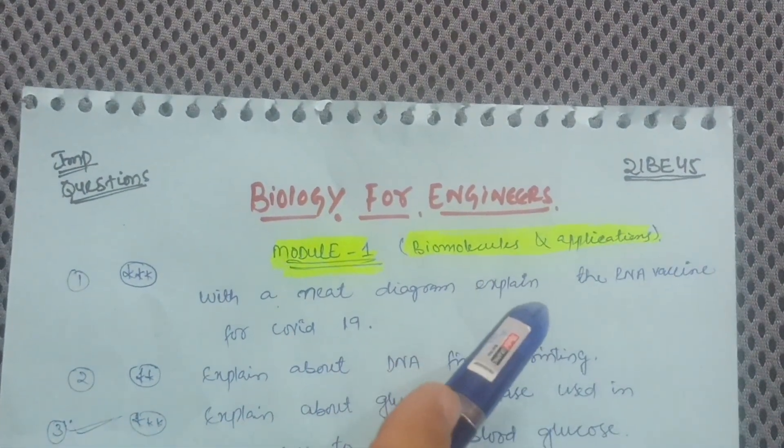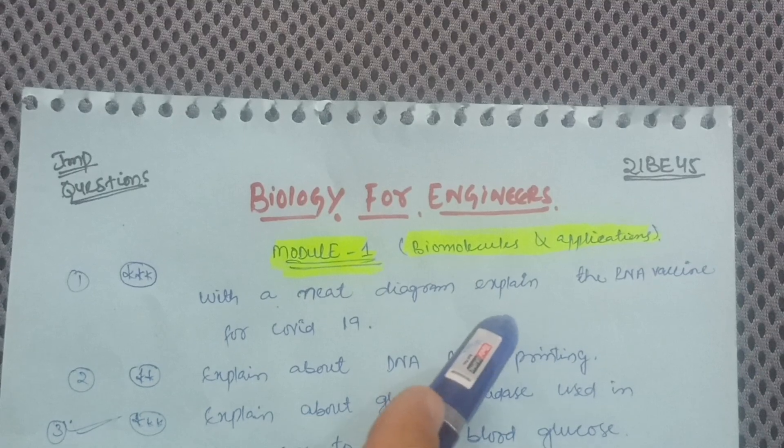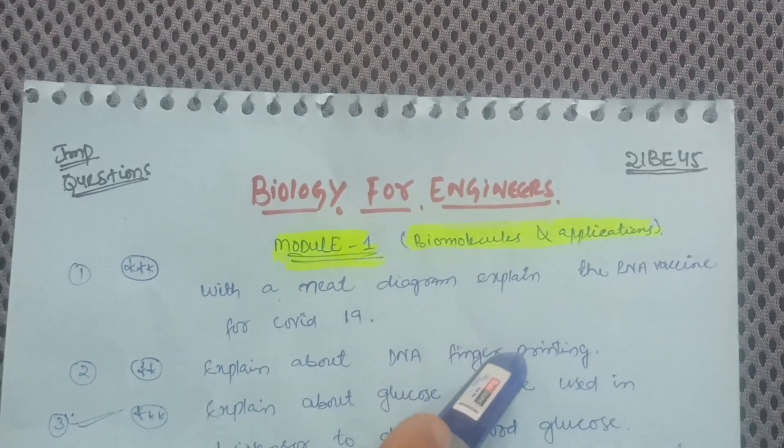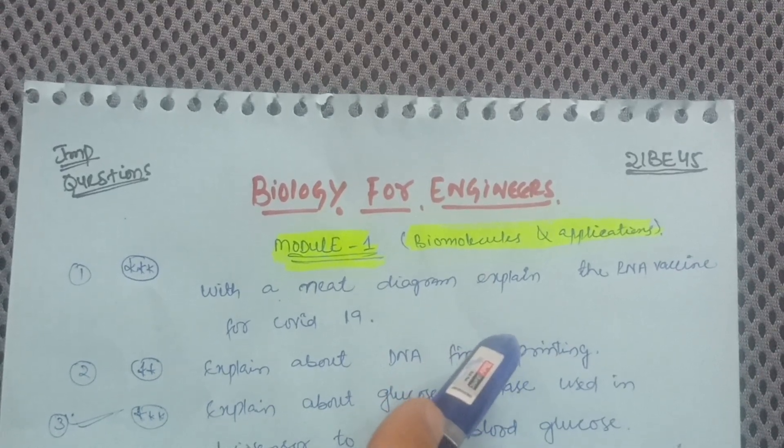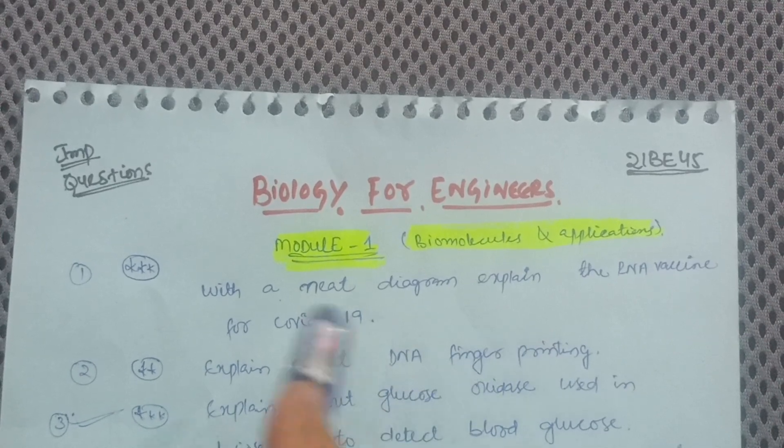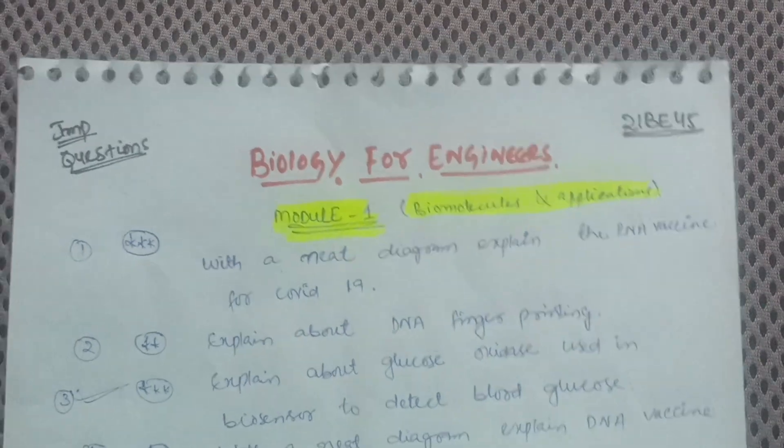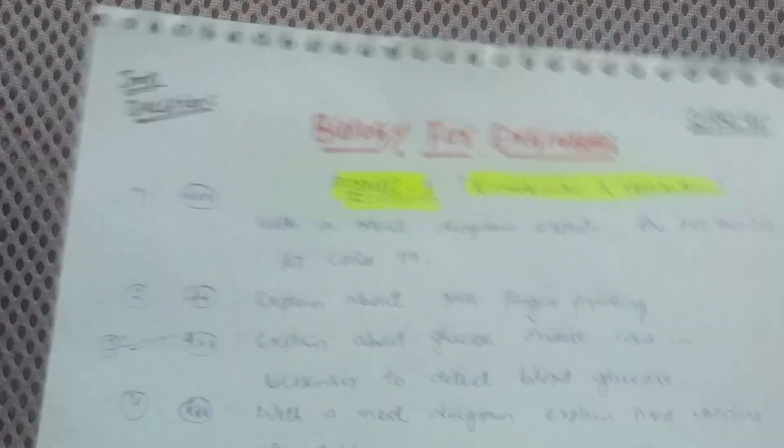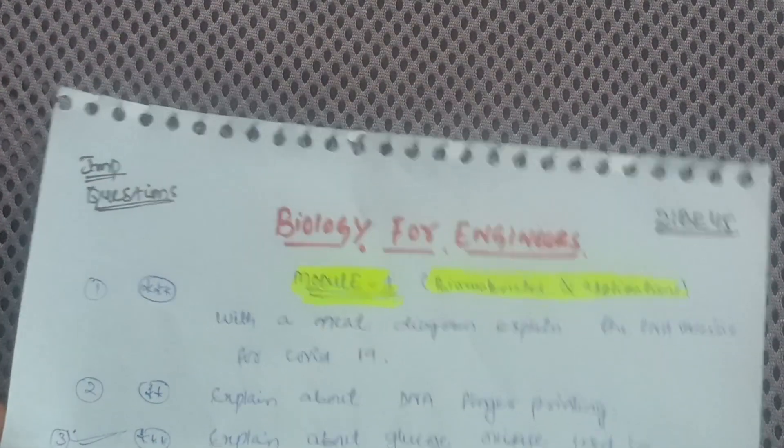The subject code is 21BE45. As you are the 2021 scheme, it will end finally after the eighth semester as VTU has ended this particular scheme. You have to struggle with the subjects as there is non-availability of papers, so fear not friends.